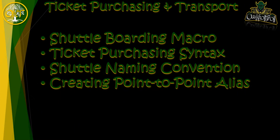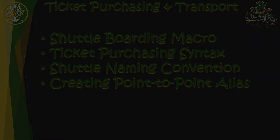In this video I'm going to cover a very basic shuttle boarding macro. After that I'm going to introduce you to the syntax, which is a set of rules that you must follow when purchasing any tickets through the ticket traveling system. Next I will cover the shuttle naming convention, which is very critical to the syntax as you're purchasing tickets. To sum everything up, I'm going to execute an alias that I've already created — it's going to purchase four different tickets and take me from Lok all the way to Dantooine using the auto board macro.